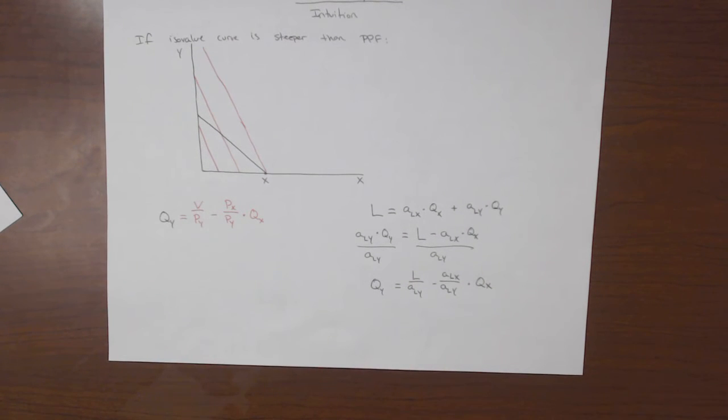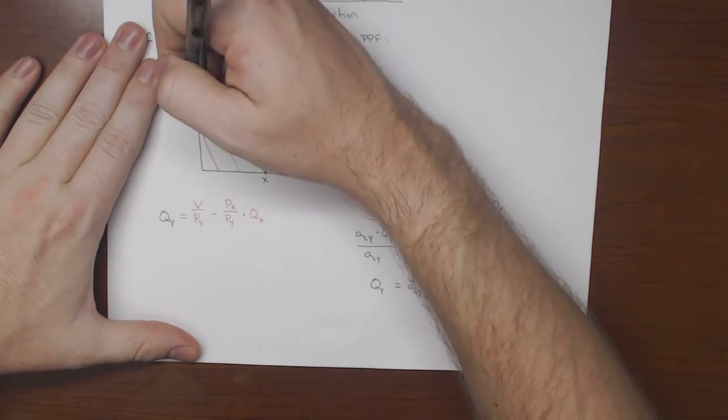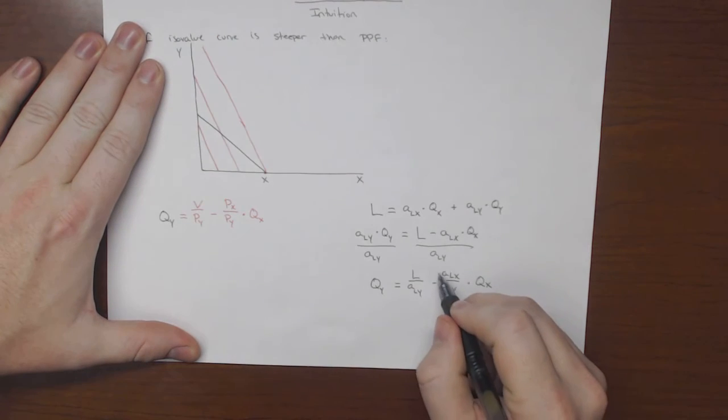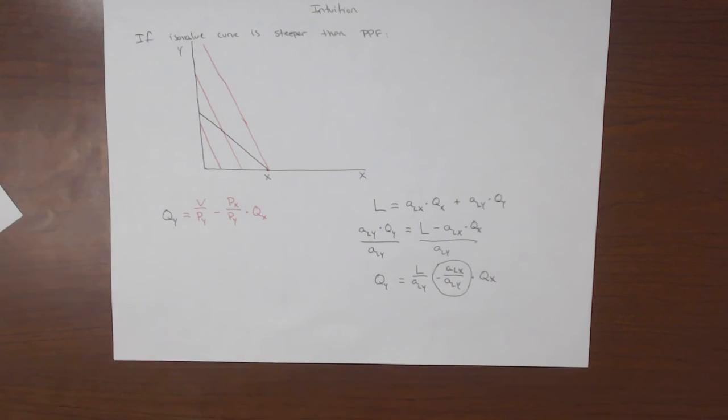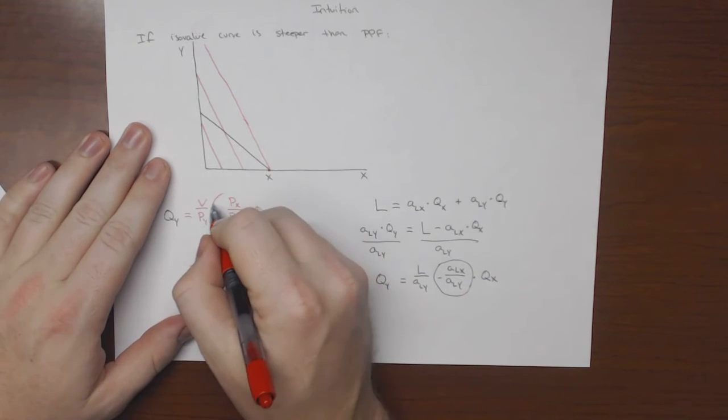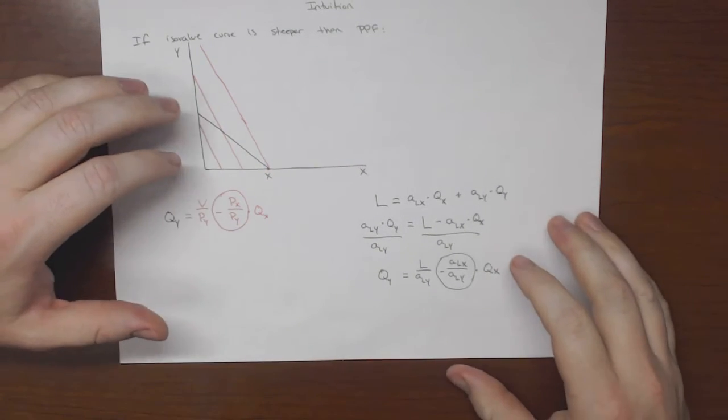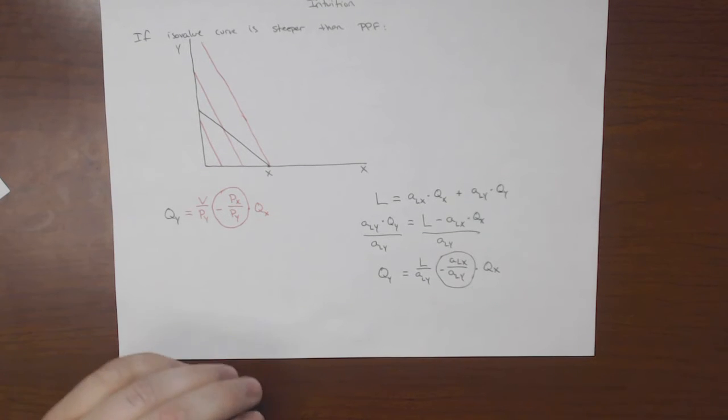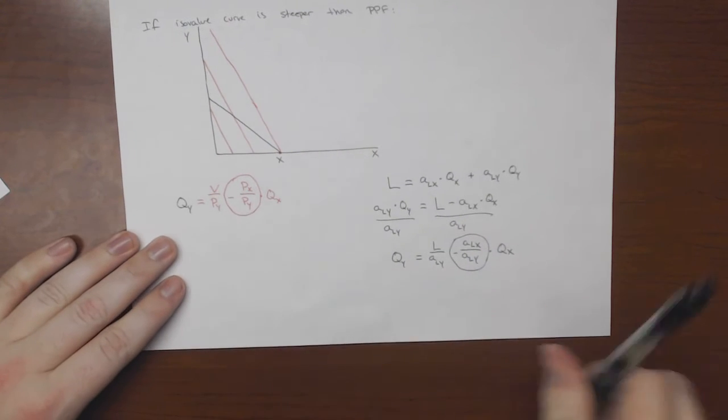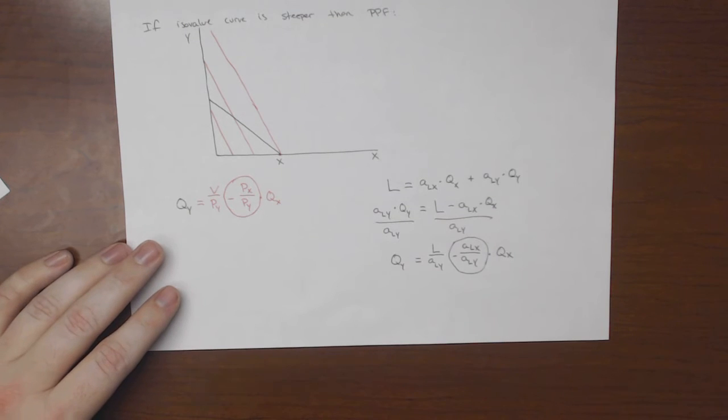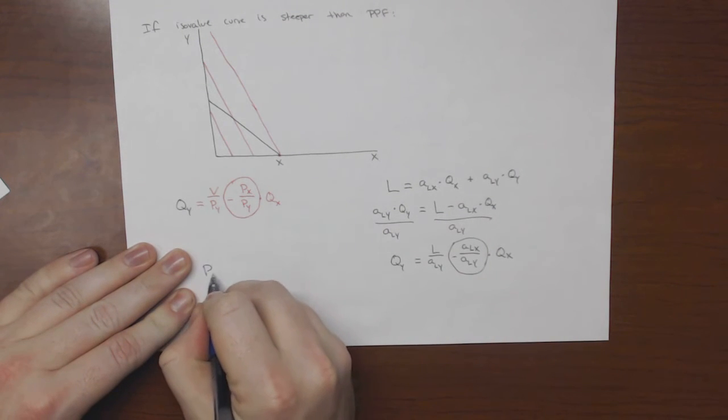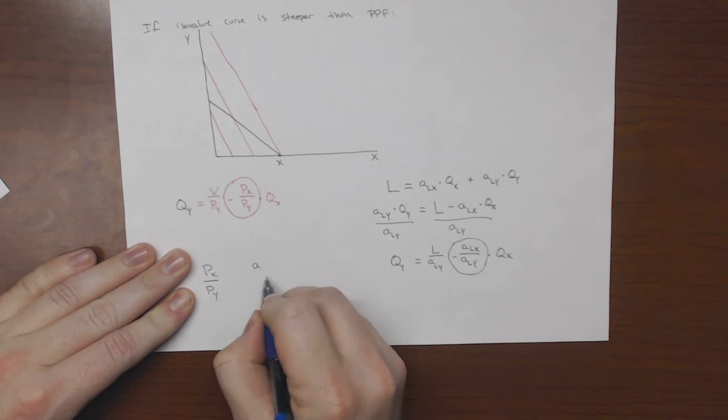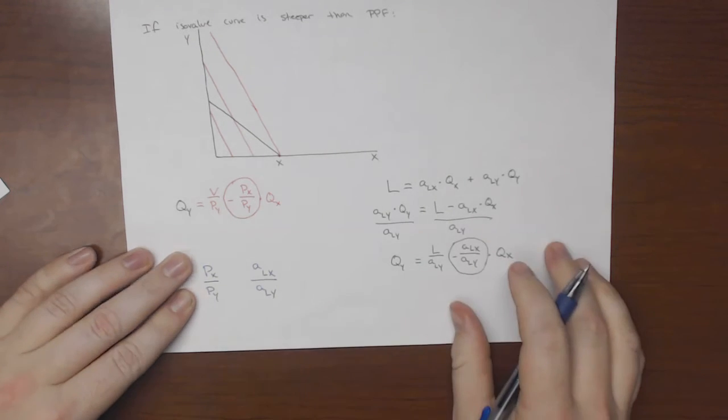And so now we have this slope, the equation of the line or the slope for here, which is right here. And so what we're noting is that it's the differences in these slopes that determine what the countries will produce. And so the question becomes, px over py, compared to alx over aly.